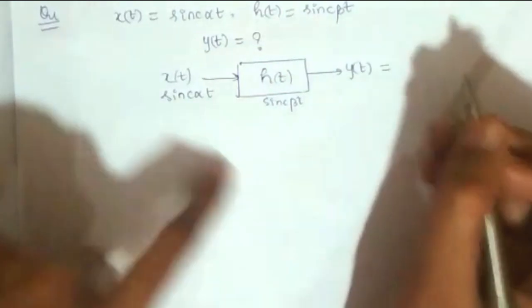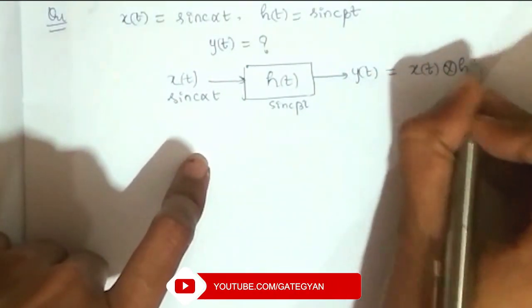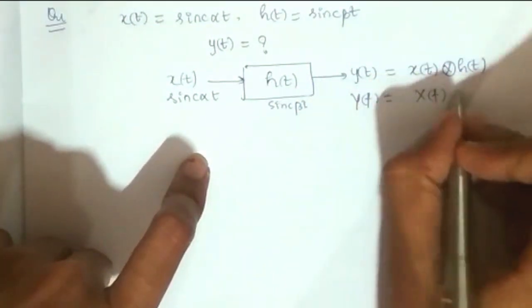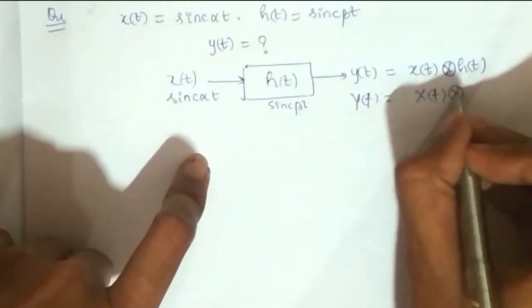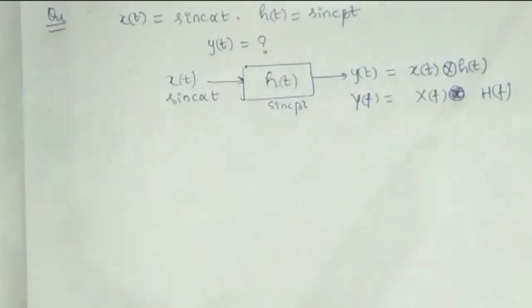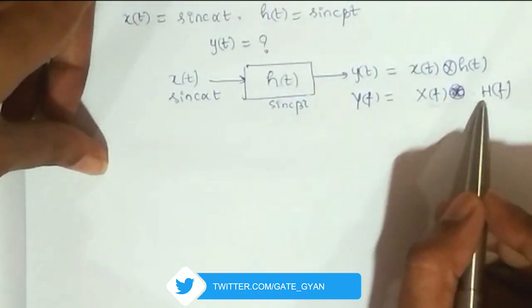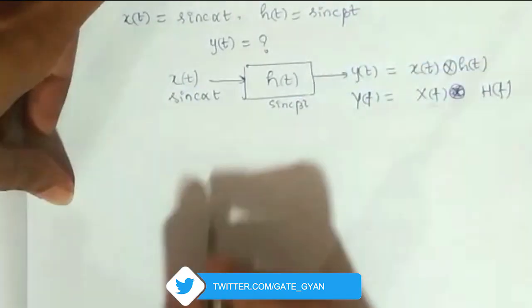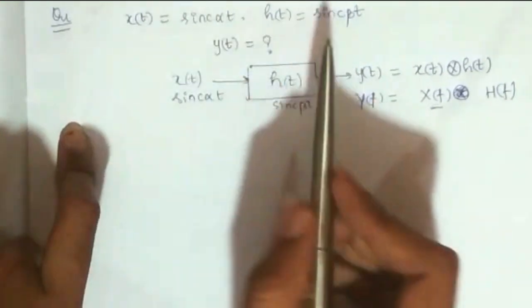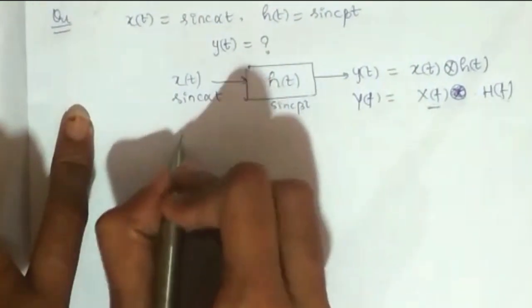So y(t) becomes equal to convolution of x(t) and h(t), and if we write in terms of frequency, then my Y(f) is going to be X(f) multiplication, X(f) into H(f). So I will draw this multiplication term; it is going to be easy for us for this evaluation.